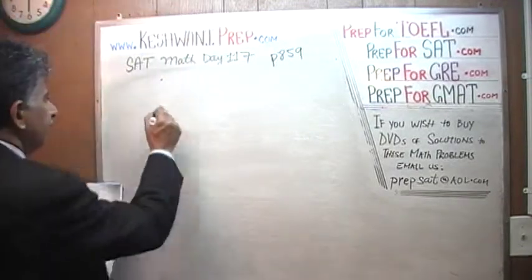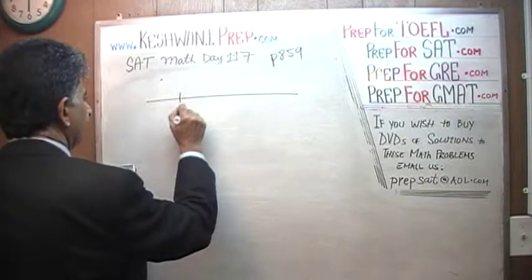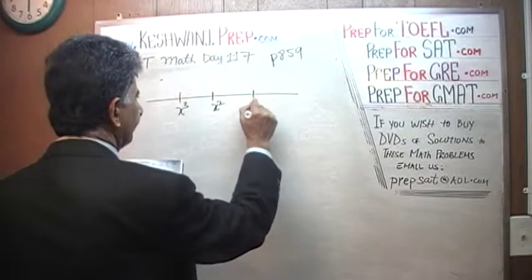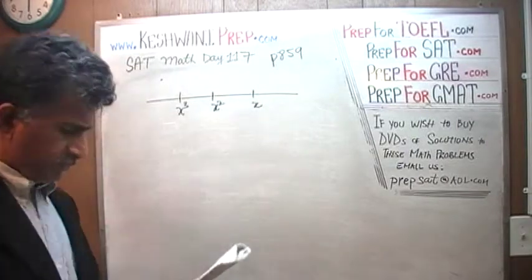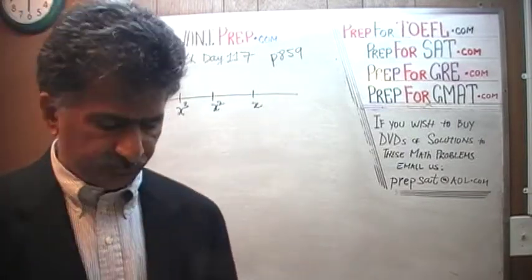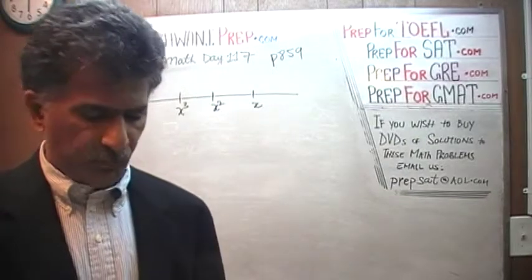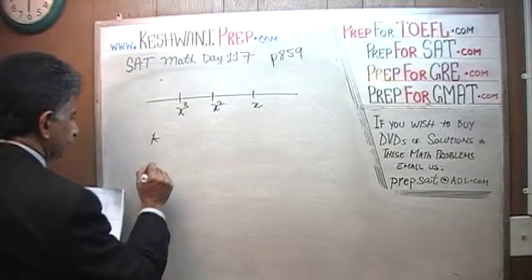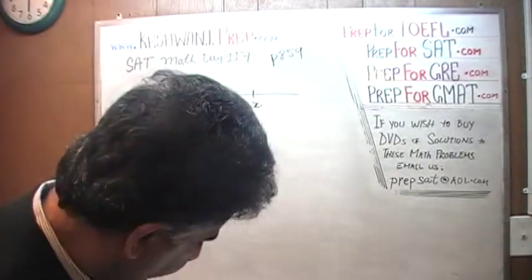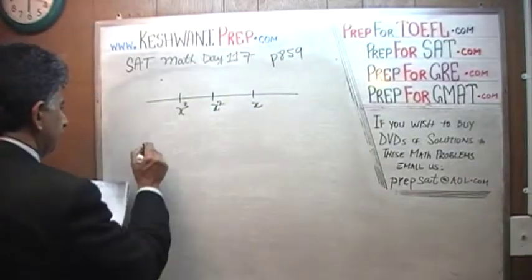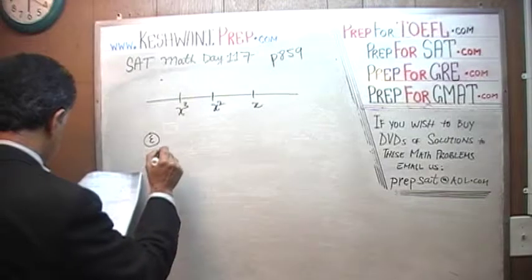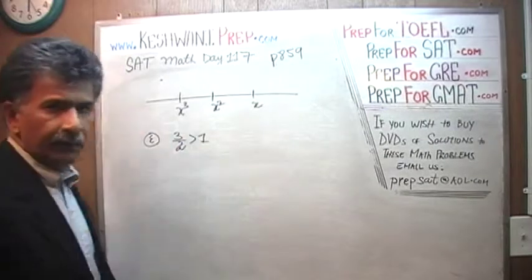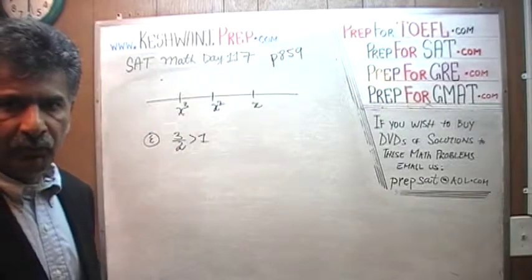Number 8. We are given a number line. We are told that this is x cubed, this is x squared, and this is x. The question is which of the following could be the value of x? Let's start from the bottom. E says 3 halves. 3 halves is more than 1.